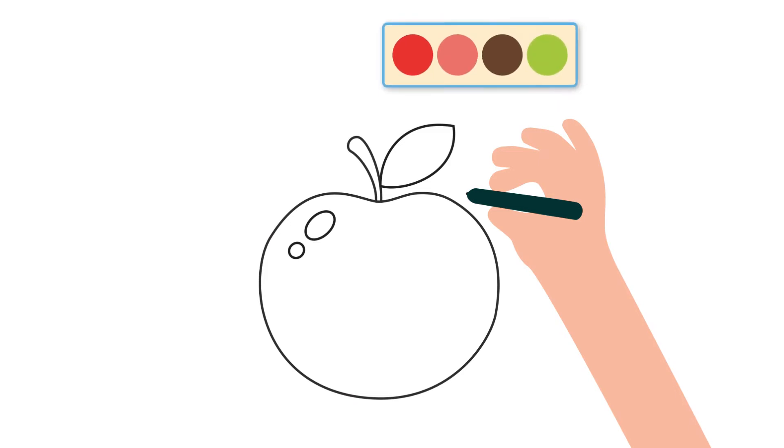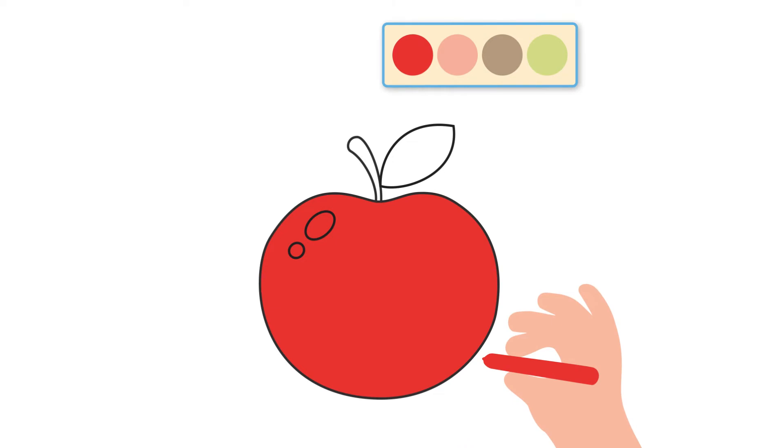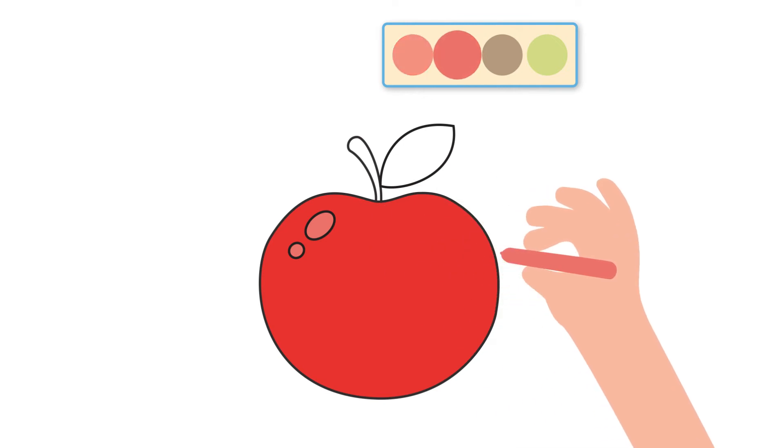Let's choose the color red for the body of the apple. Wow, it's looking good. Now we are going to color the two dots with a light red. The apple is really looking good.